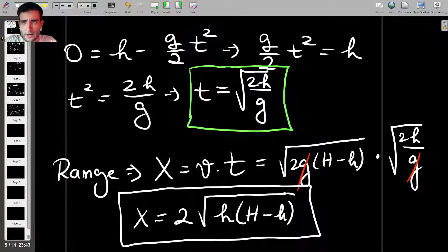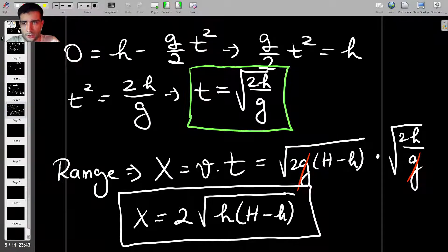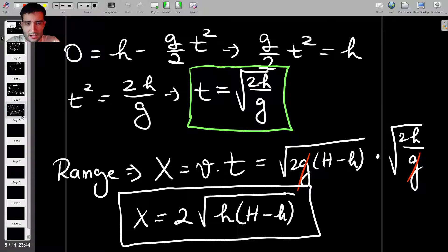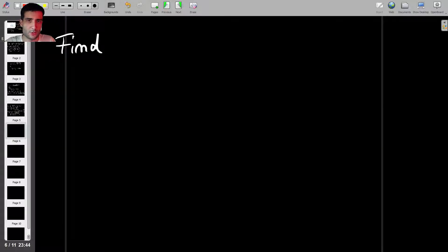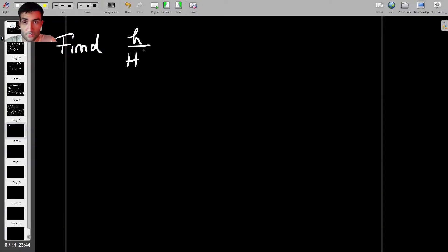This means that the range of the water depends on how tall, well, I would say how tall the container is, but it actually depends on capital H, which is the distance above the ground of the free surface, as well as the height of the orifice. So you can now do any kinds of plots you want. You can plot X as a function of h, but what I'll do now is try to find, so I'll answer the question about the maximum range. Find the value of h over H such that X is maximum.